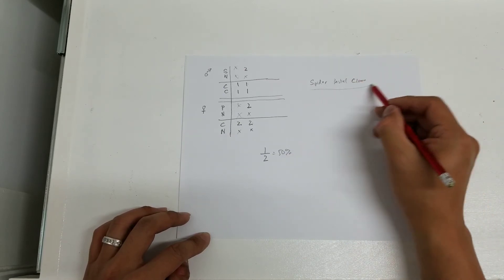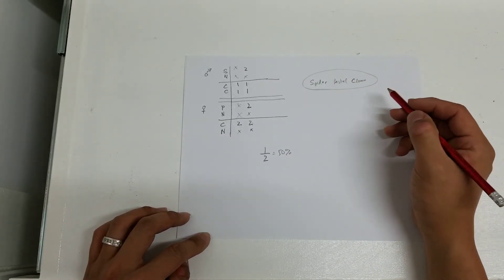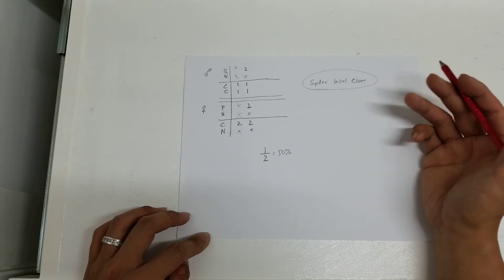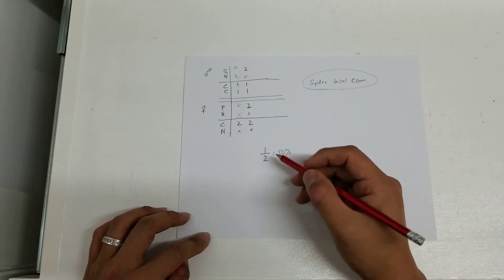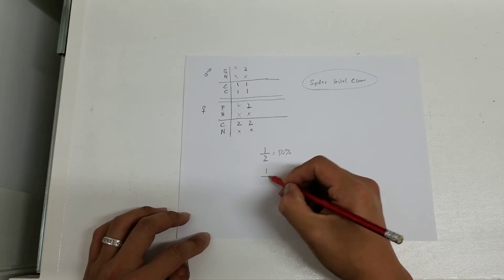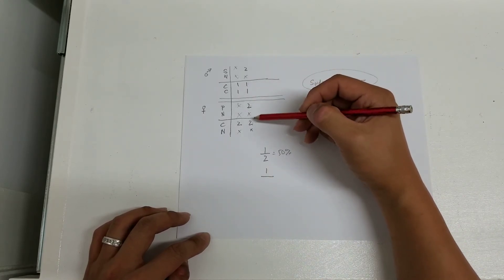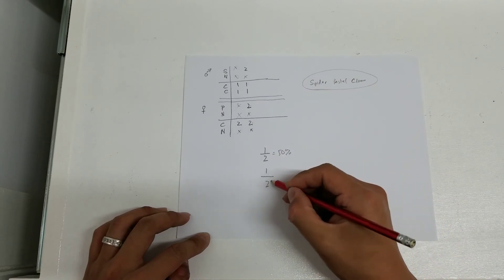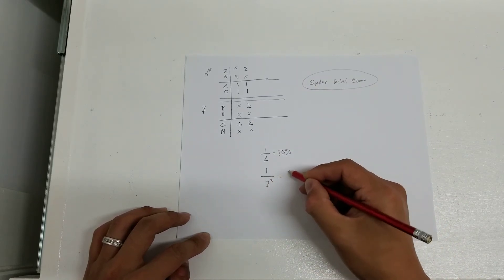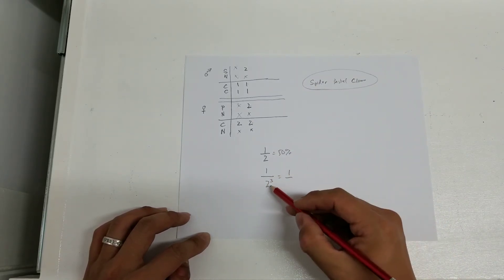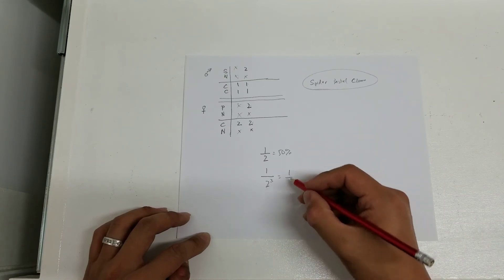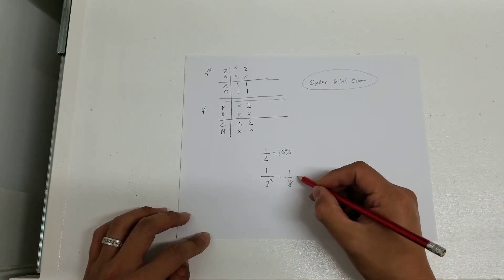So what we're looking for is basically a bumblebee clown. And the odds of that, we have one over two times two times two. So that's two to the power of three, which equals one over two times two is four, four times two is eight, one over eight.